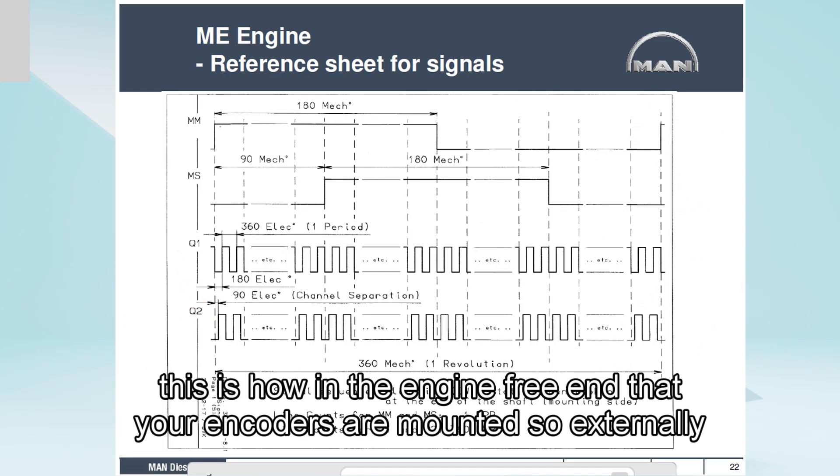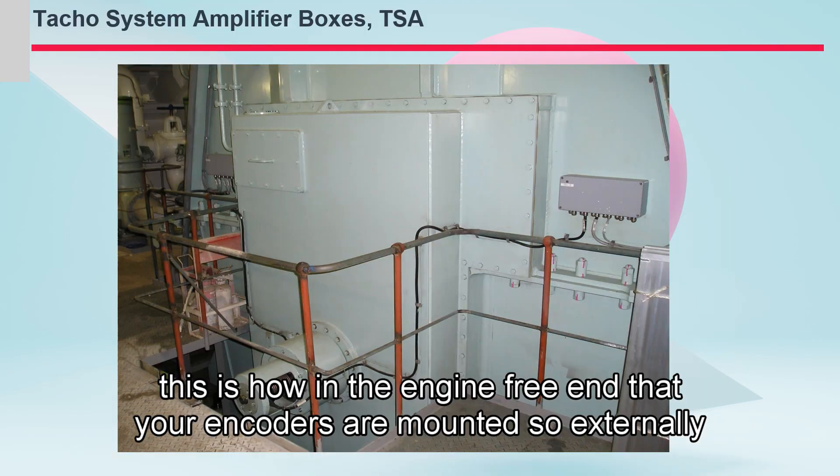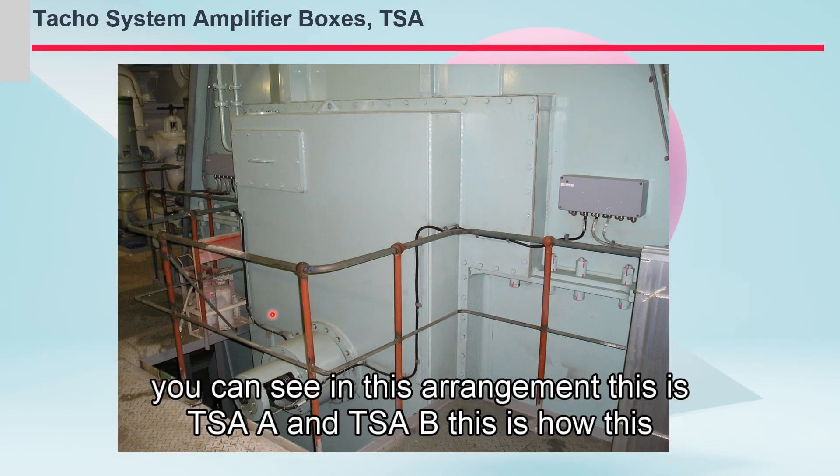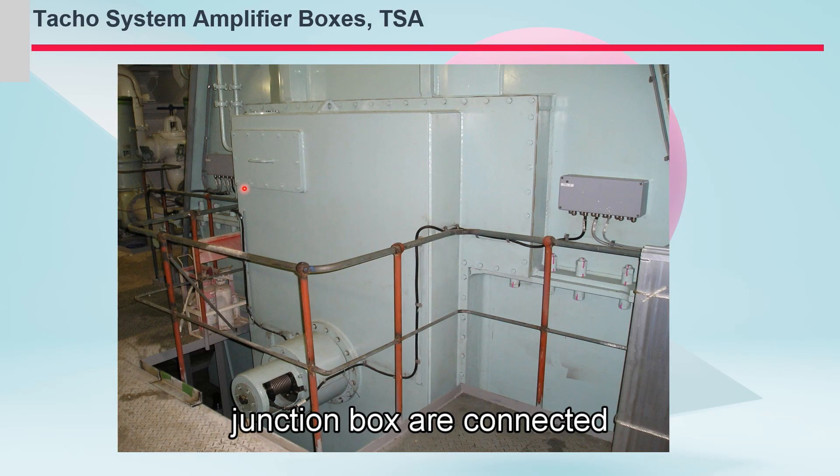This is how at the engine free end, your encoders are mounted. So externally, physically, you can see in this arrangement. This is TSA A and TSA B. This is how these junction boxes are connected to your angle encoders.